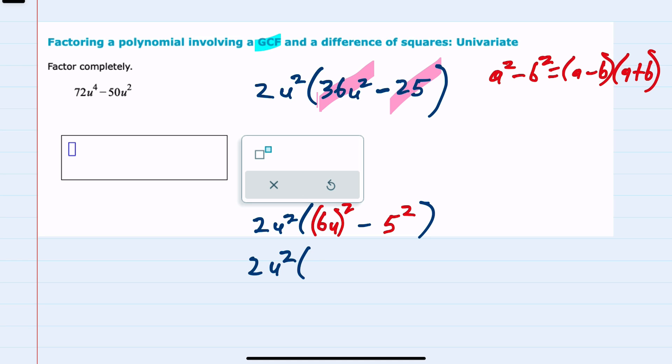So that would factor into the first one without the square minus the second without the square, and then that first one again without the square plus the second without the square.